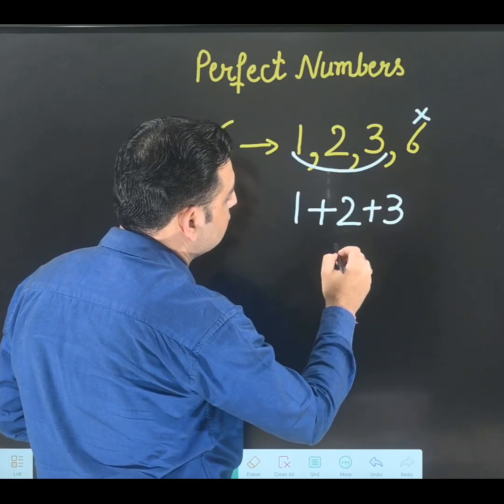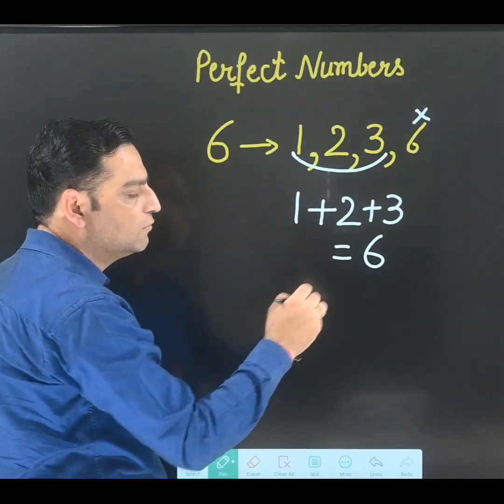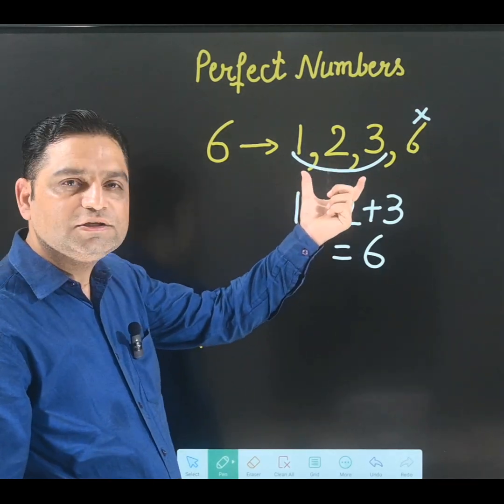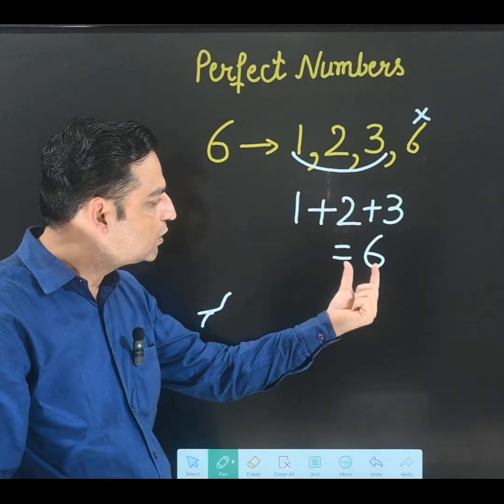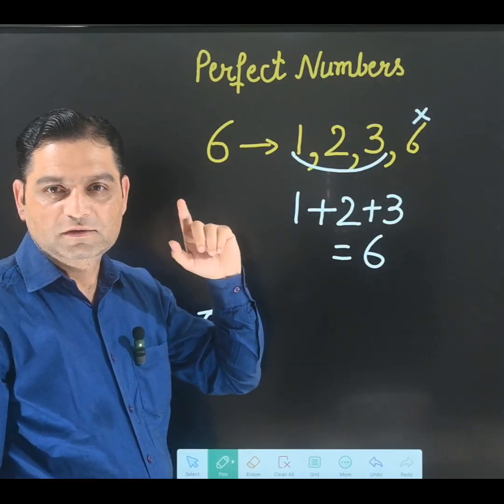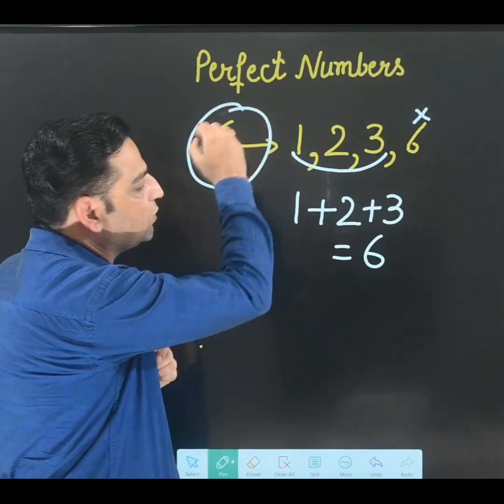...2 and 3, we are getting 6. So when you add the factors, if you get the same number, that means it's a perfect number. So 6 is the first perfect number.